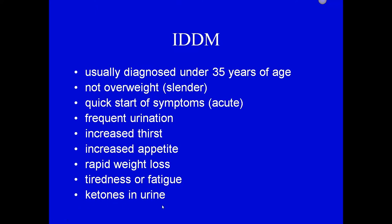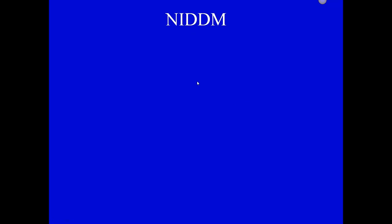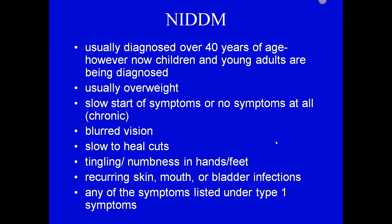In non-insulin-dependent diabetes, patients are typically over 40 — though younger people are increasingly affected — and are usually overweight due to nutritional and lifestyle habits. They have a more chronic or slow onset of symptoms. The symptoms are similar: polyuria, polydipsia, and increased hunger. Additional symptoms that may be noticed include blurred vision. Glaucoma is a complication of both NIDDM and IDDM.